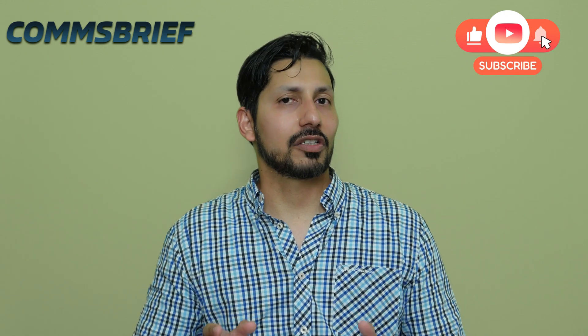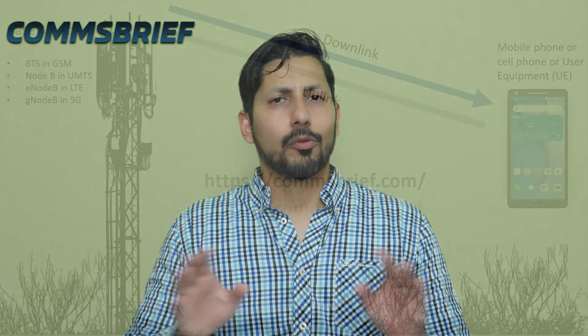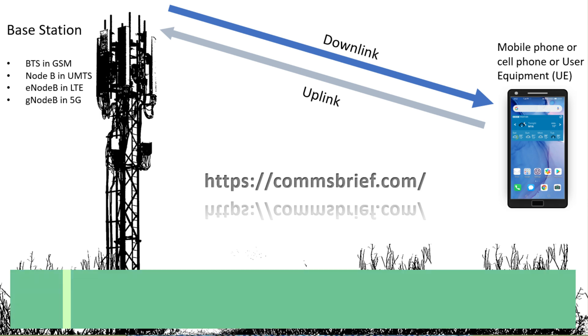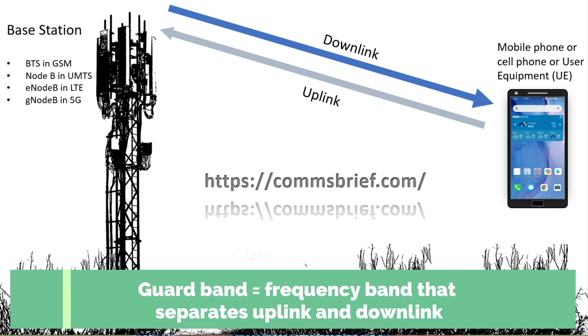However, if a telecom system is using TDD, it doesn't mean that it becomes like a walkie-talkie — it can still be a modern wireless system. In FDD, or Frequency Division Duplex, a mobile operator is given a frequency band and they chop it up into three pieces: one is used for the uplink, one for the downlink, and the one in the middle is the guard band.